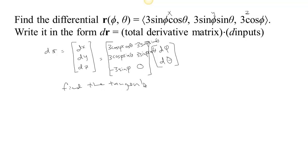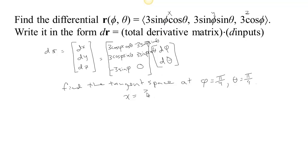Let's find the tangent space in this case. Since this is a surface, the tangent space would have to be a plane — it's going to be a flat surface. Find the tangent space at phi equals pi over four and theta equals pi over four. When phi equals pi over four and theta equals pi over four, the sine and the cosine are both root-2 over 2. So root-2 over 2 times root-2 over 2 gives one half, so the x value is 3 halves. Similarly, the y value is 3 halves. And the z value is 3 times the cosine of pi over four, which is root-2 over 2, so z is 3 times root-2 over 2.